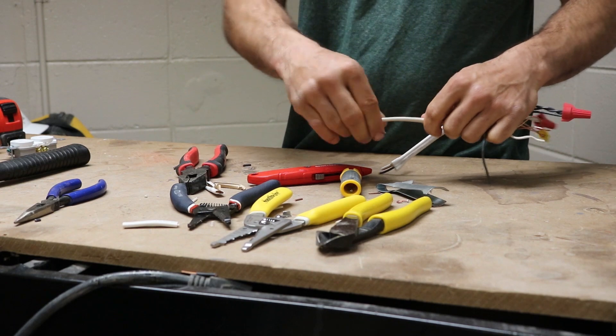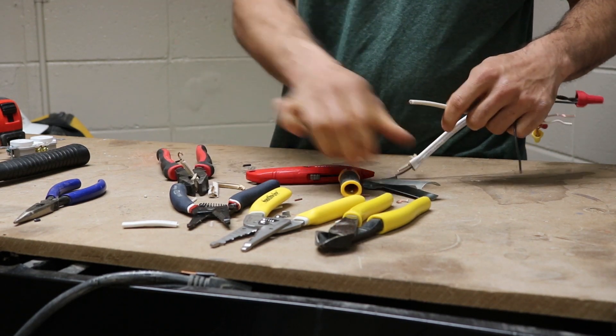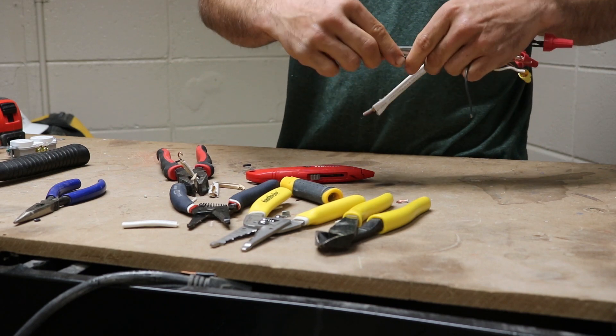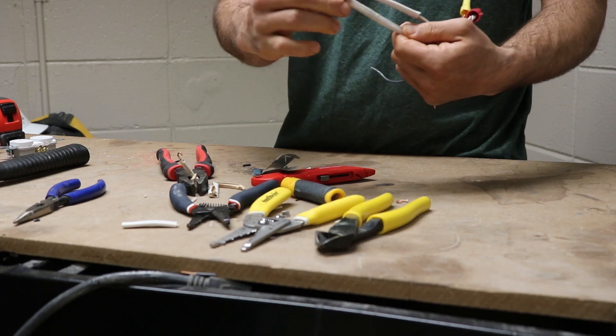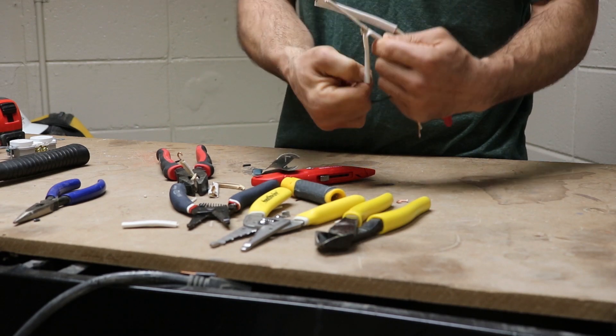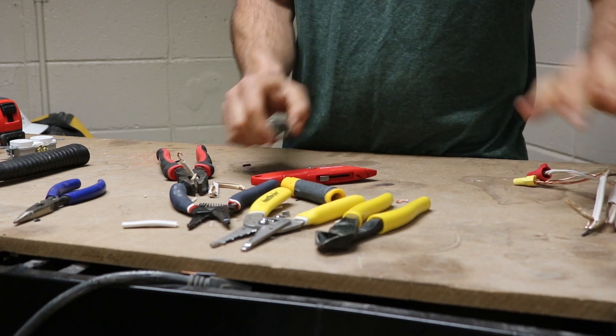This one right here, it works very similar. You slide the wire through, you pinch down with that cutter, and it just cuts the sheathing for you without cutting any wire. So a quick recap here.